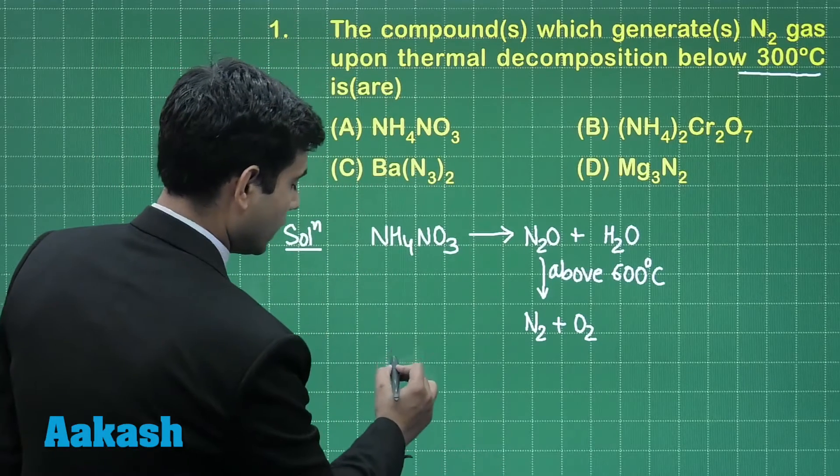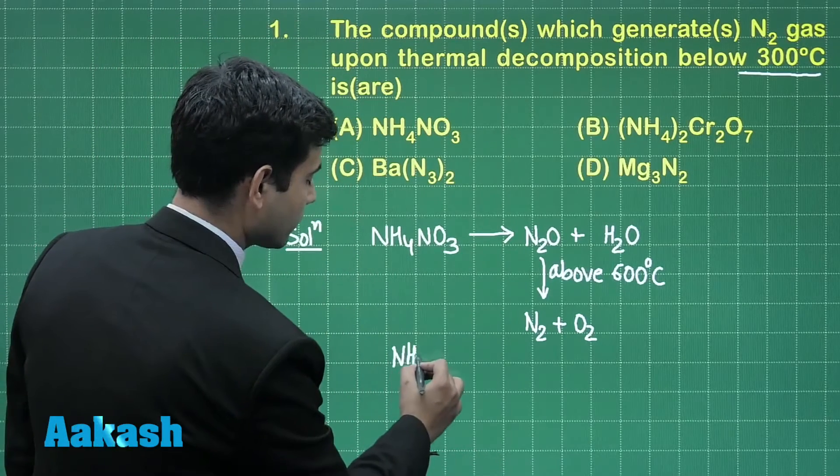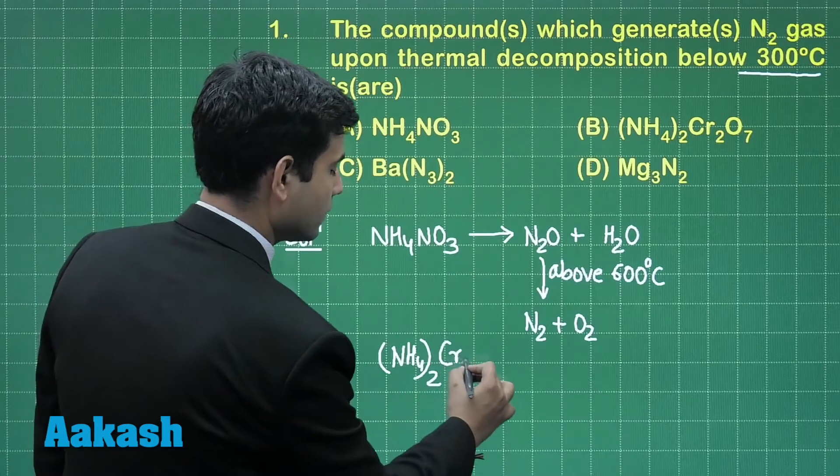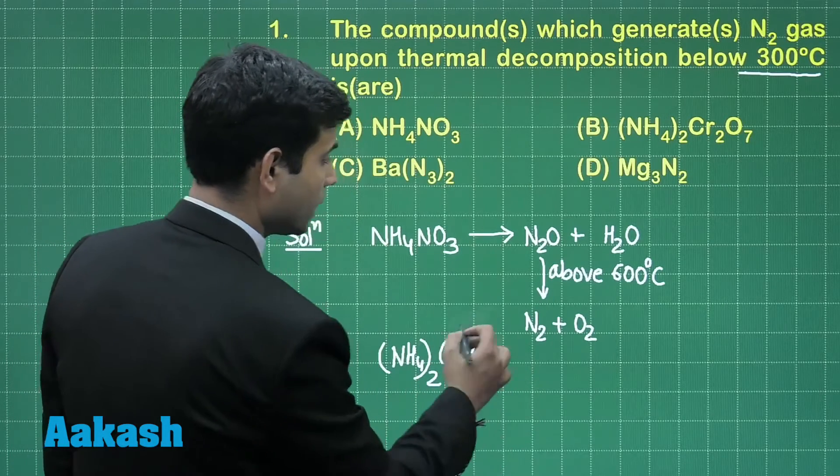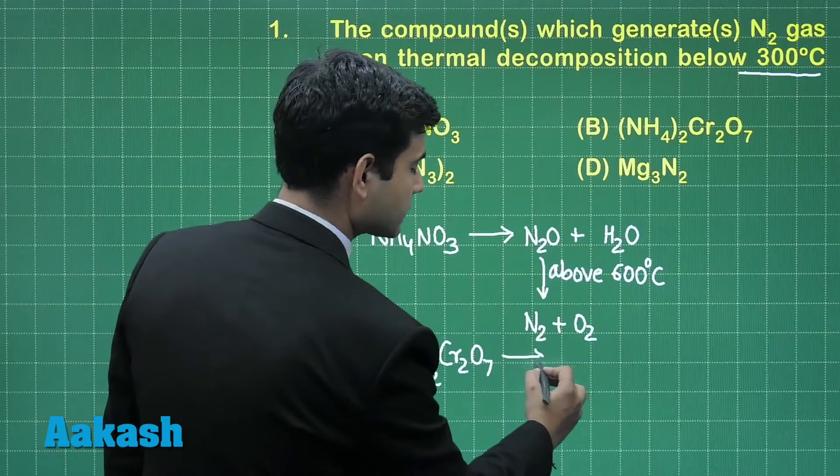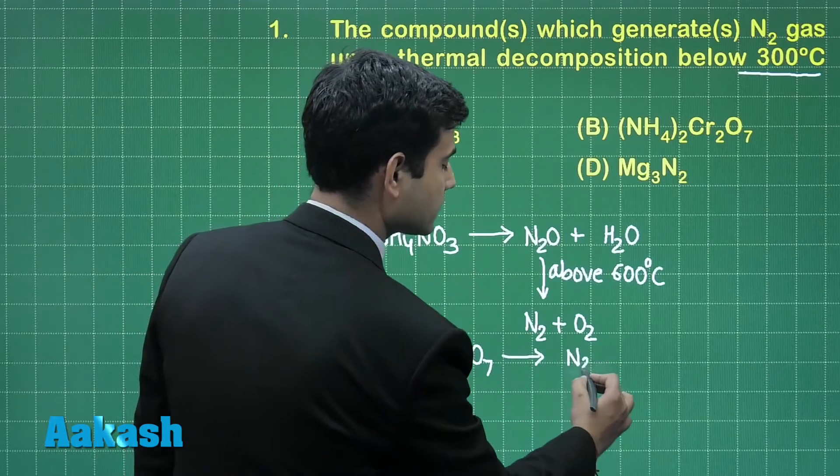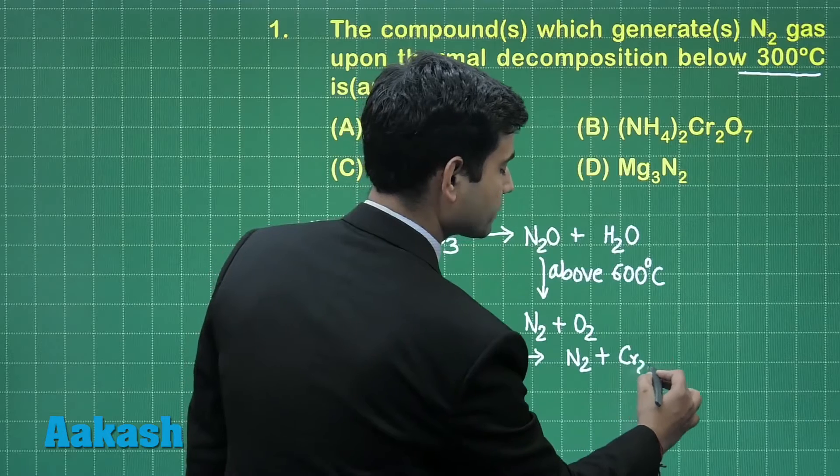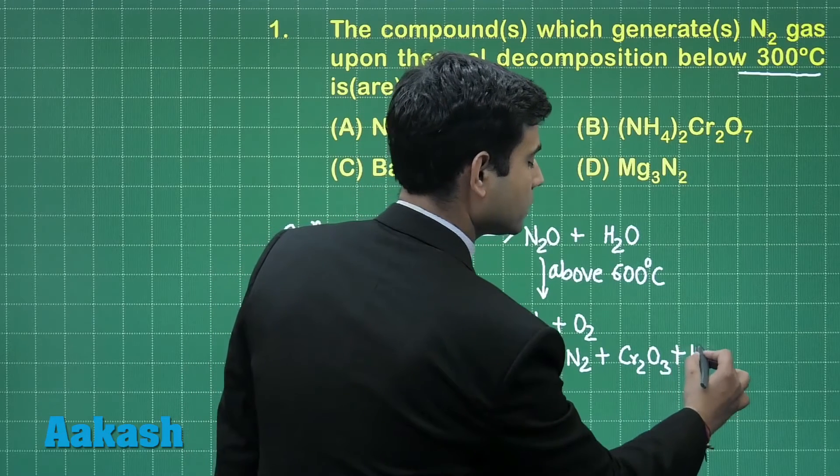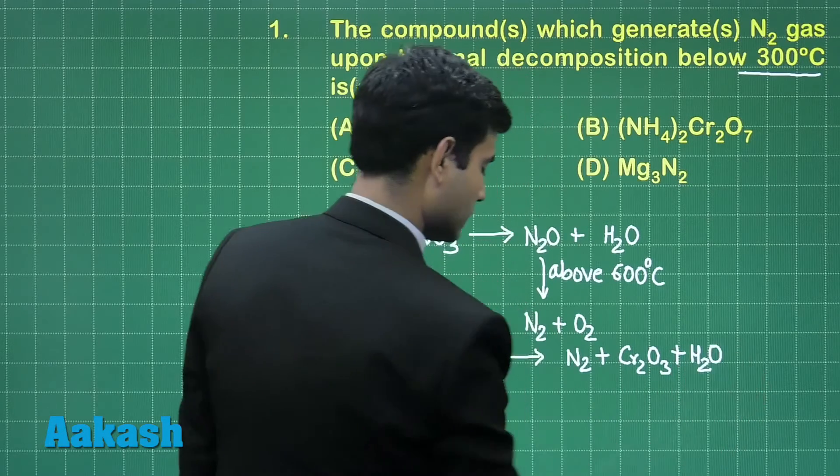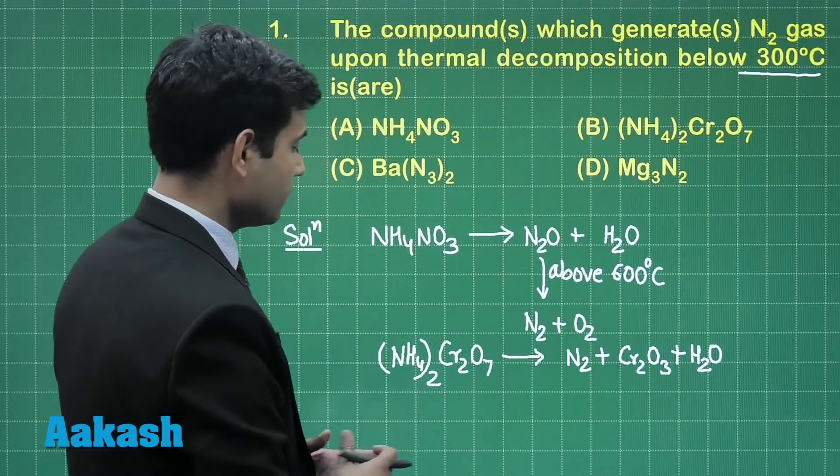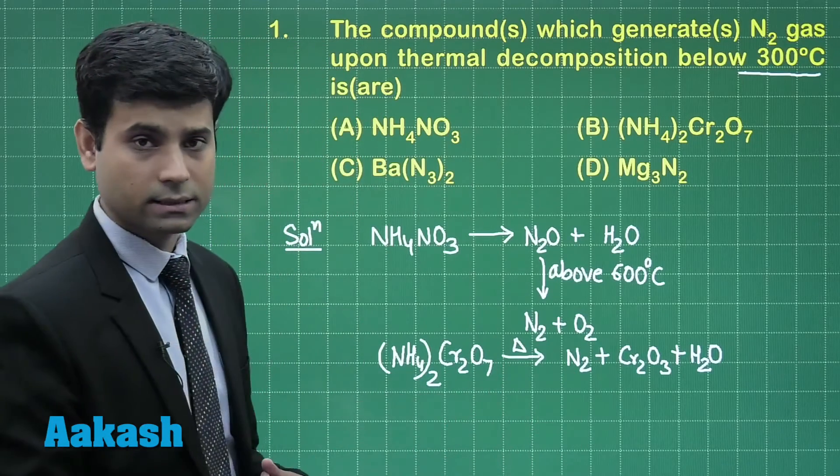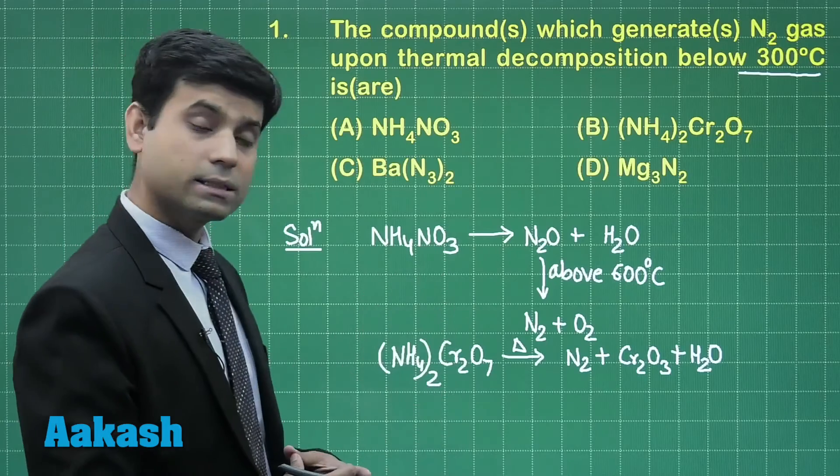If I talk about ammonium dichromate, ammonium dichromate when heated below 300 degree Celsius gives us nitrogen gas and Cr2O3 along with water. In this case we can see on heating we are getting nitrogen gas, so B option is an answer.